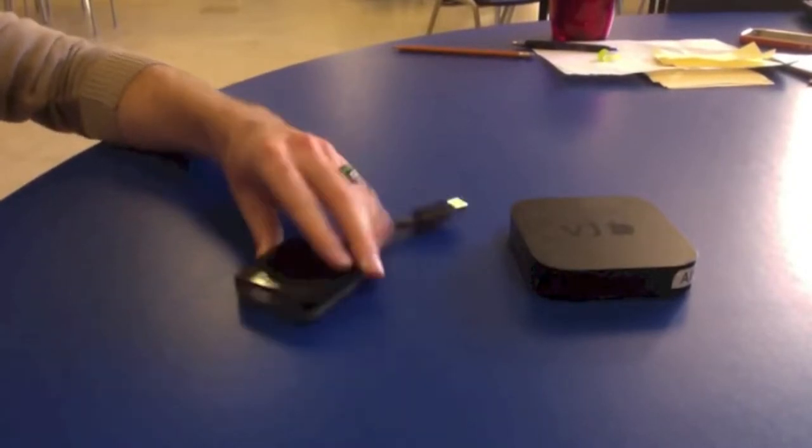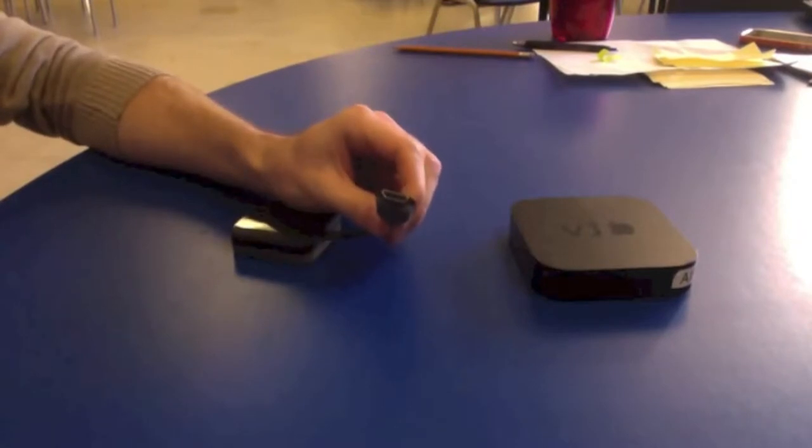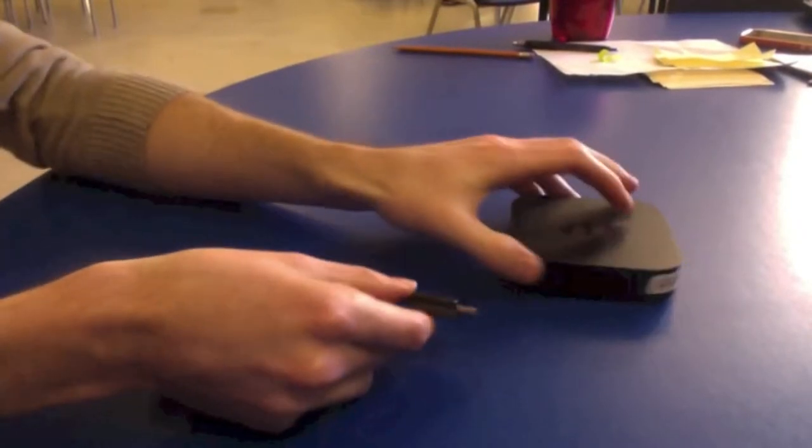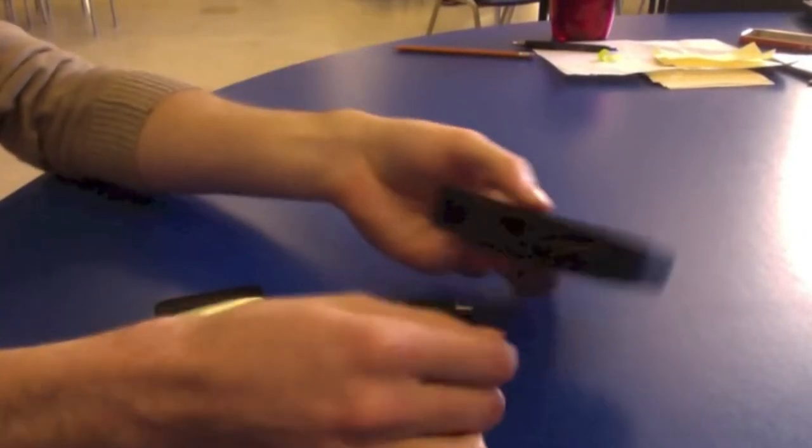You'll see the VGA connection on this side and an HDMI end on the other. This will be the end that connects into the back of your Apple TV.